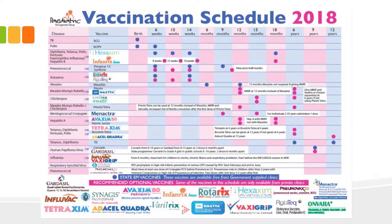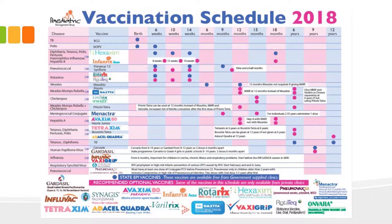Here we have the vaccine schedule that is produced by the Paediatric Management Group of South Africa. We can see from the schedule a very busy slide, and by the time the child gets to 12 years of age we see that there are lots of injections. On the left hand column we have a long list of illnesses which we are going to consider today.